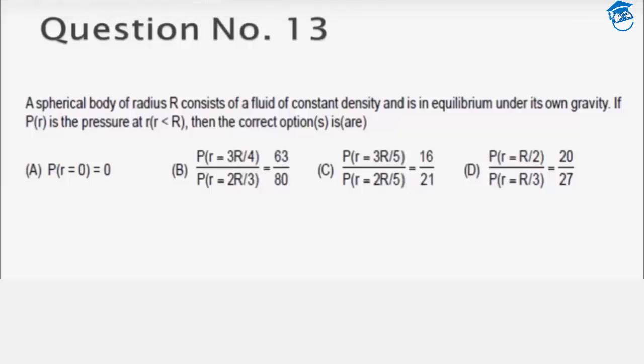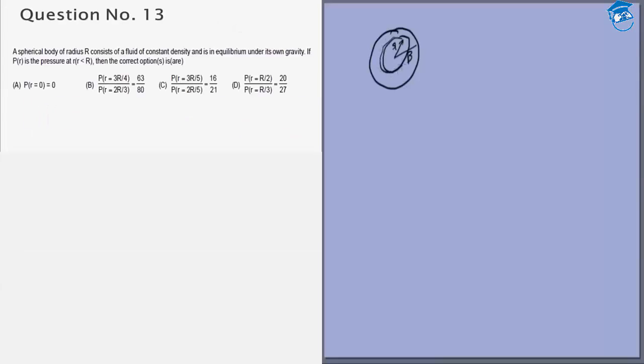We are given a spherical body of radius R and it is in equilibrium under its own gravity. Then we want to find the pressure at a distance r. This is in my opinion one of the best questions of this exam because it does test your conceptual understanding.